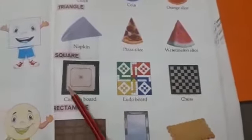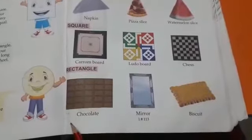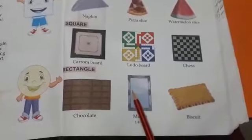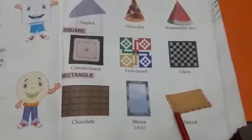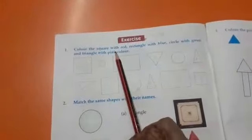Rectangle: chocolate. Joe chocolate ki shape ye hai, ye hai ki rectangle. Mirror, biscuit, this is the shape of rectangle. Next, color the square with red, rectangle with blue, and circle with green and triangle with pink color.